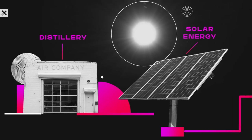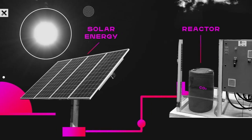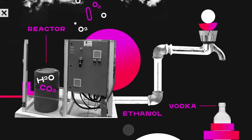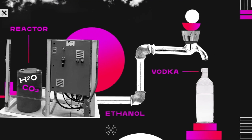One of the byproducts of our process is ethyl alcohol, also known as ethanol. It is the type of alcohol that you can drink to have a good time. Because of that, our first product, or our very first product, is air vodka.